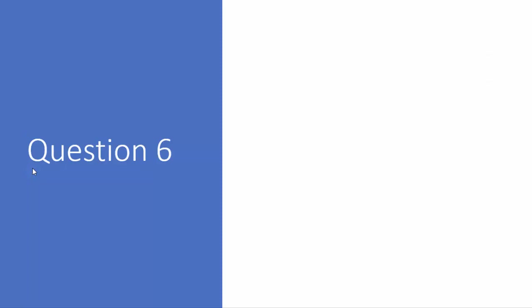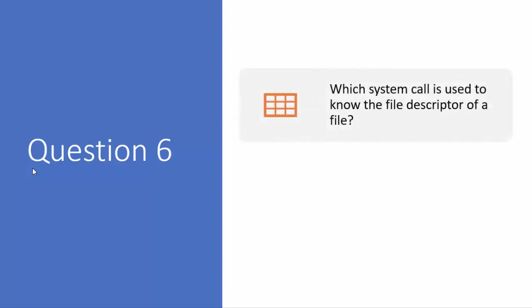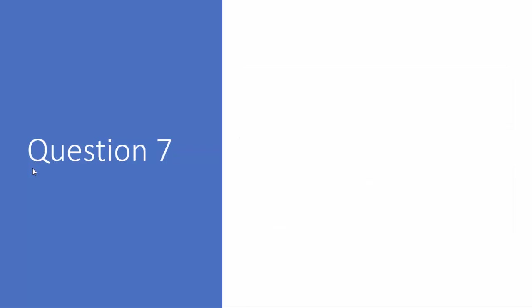Question number six: which system call is used to know the file descriptor of a file? This is straightforward — the answer is the open system call.